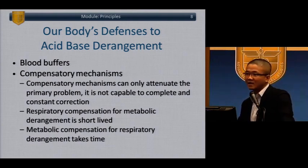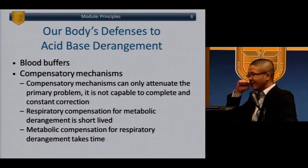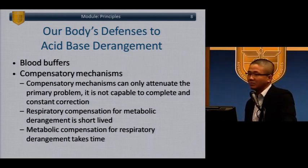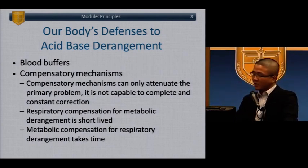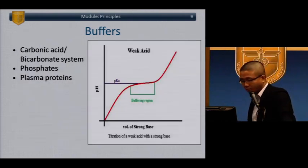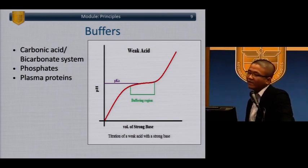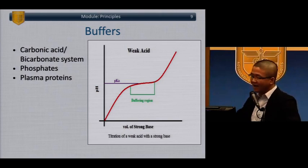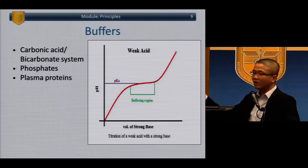Neither hyperventilating nor hypoventilating is sustainable over a long period of time. If you have a respiratory problem and compensate by a metabolic process, the downside is that it takes time — our kidneys need a little bit of time to adjust. These systems are in place so we don't have huge swings in pH. The asymptotic graph shows that if you keep adding volumes of strong base to a weak acid, the pH doesn't change very much over a broad volume, as outlined by that green box.